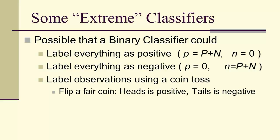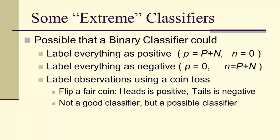We could label observations using a coin toss: flip a fair coin, heads is positive, tails is negative. This isn't a good classifier in general, but it is a possible classifier. We could determine whether something is in class 1 or 0 by simply flipping a coin and looking at the outcome.